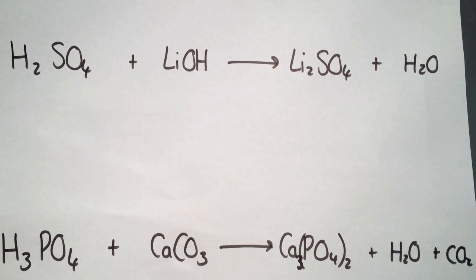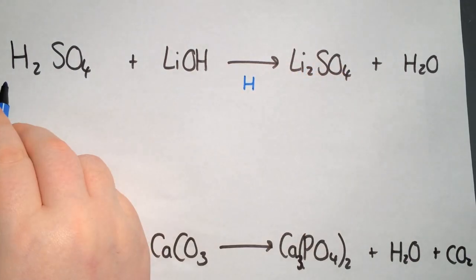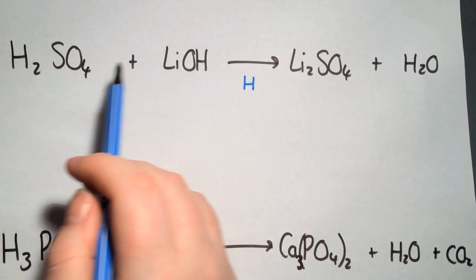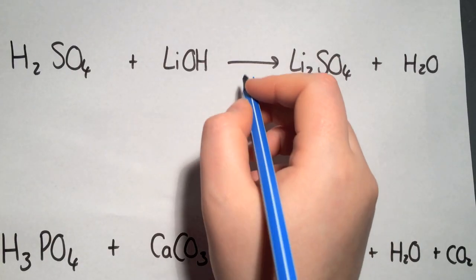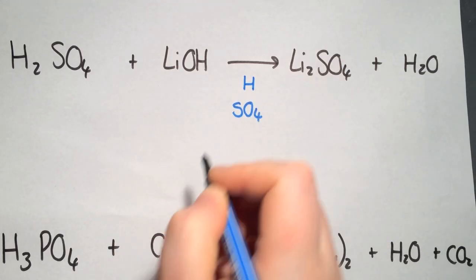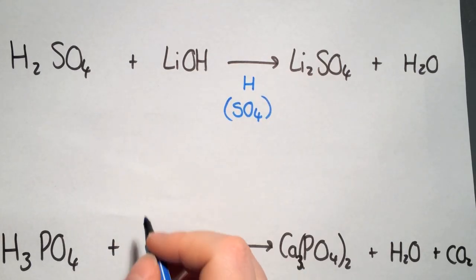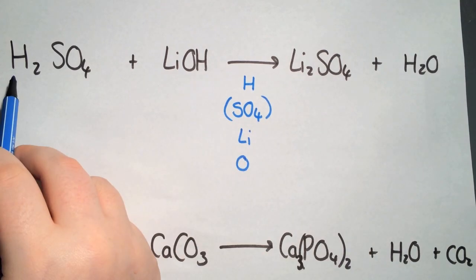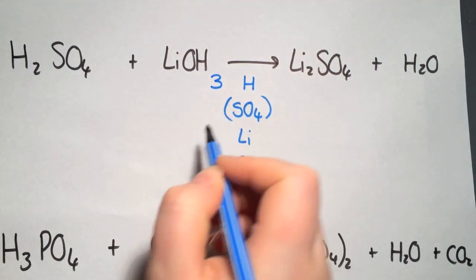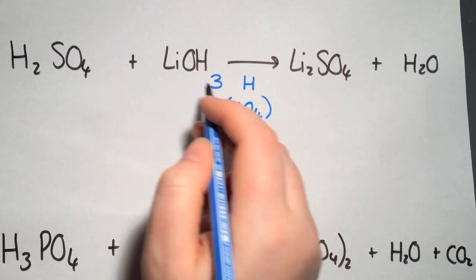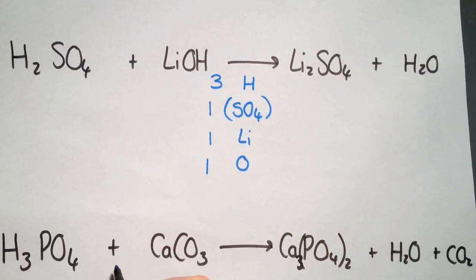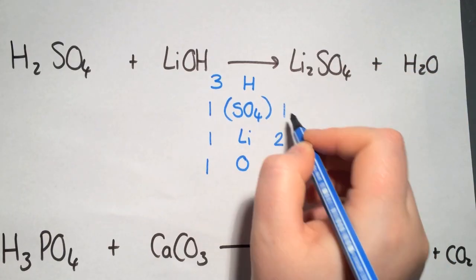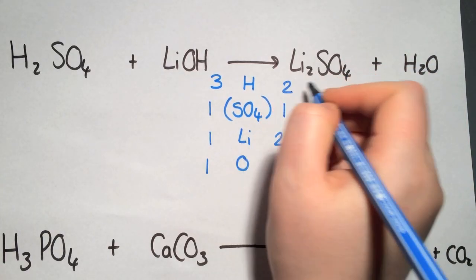In this example we have what we call group ions. We have hydrogen, and notice that the SO₄ on both sides of the arrow stays as a group — it does not split up into elements. When you write it out you don't have to split it into elements; it may be helpful to put it in brackets to remind you it's a whole group. We also have lithium and oxygen. On the left side we have three hydrogens, one SO₄ group, one lithium, and one oxygen. On the right hand side we have two lithiums, one SO₄ group, two hydrogens, and one oxygen.